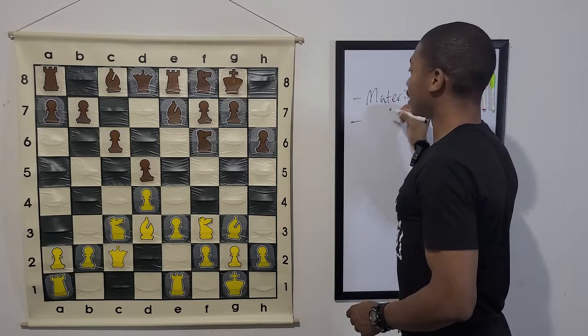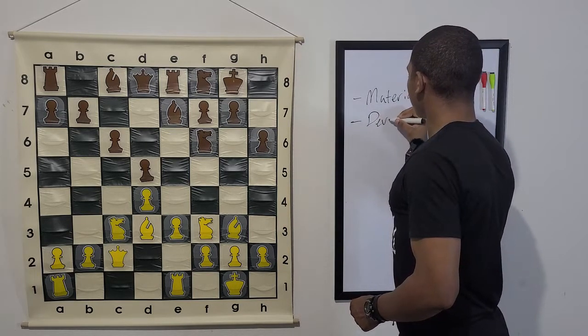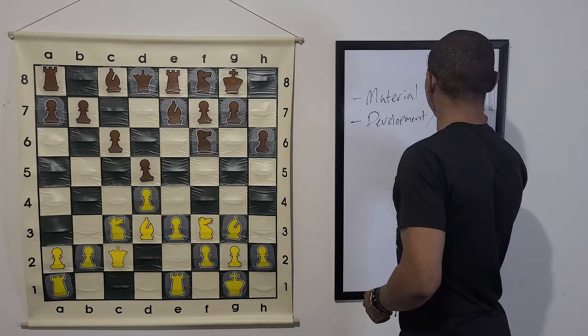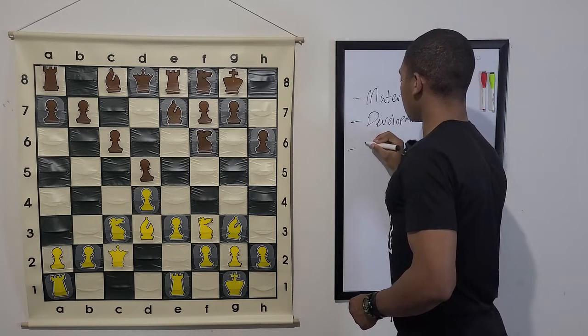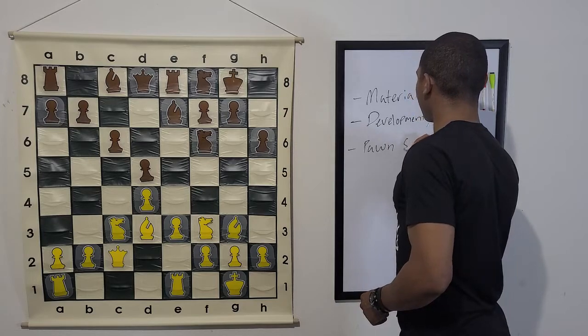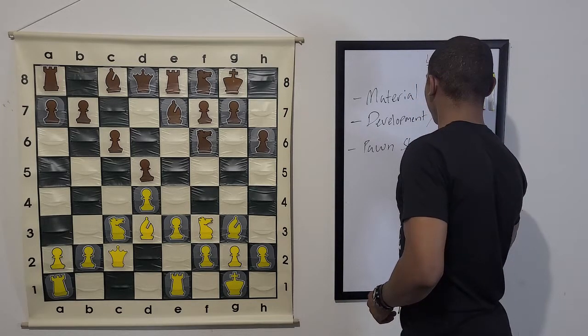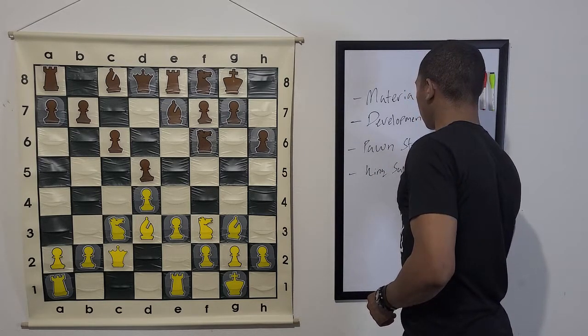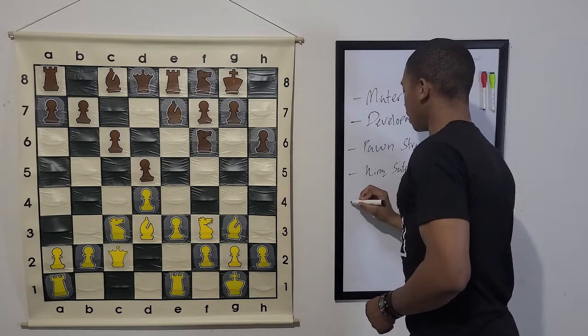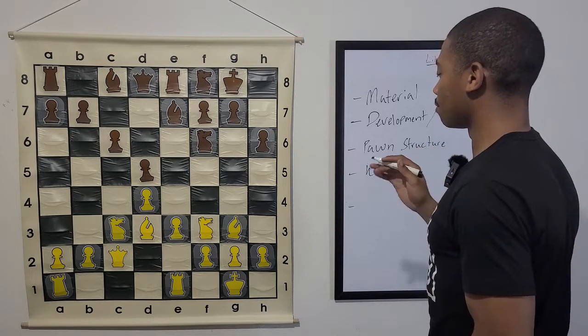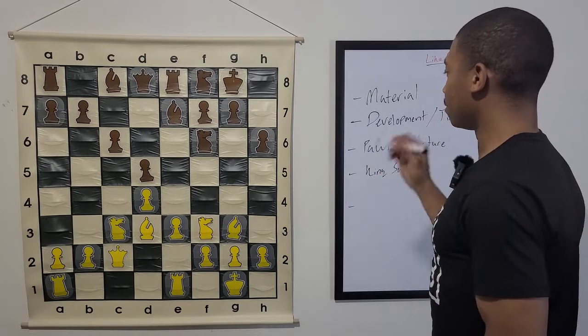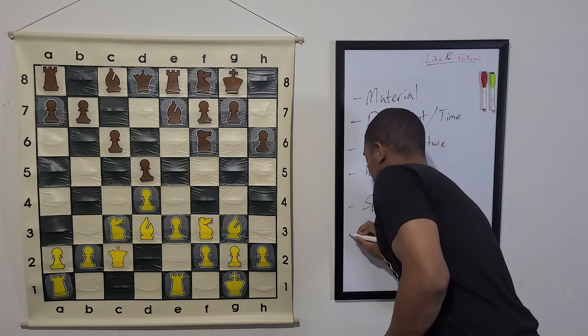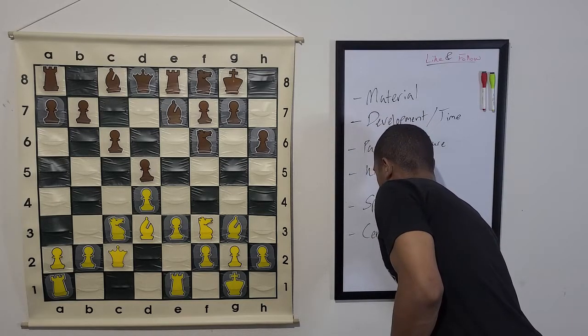So these are the six things that we're going to be looking at. First of all, material. So basically, who is up in material? Secondly, development or shorten it up, time. I'm going to explain all these afterwards. Third, pawn structure. And my handwriting is trash, so do not talk about it. Fourth, king safety. King safety is important. And then lastly, no, not lastly. I'm forgetting one. I know the next one is space. Oh, yeah. And then the sixth one, center control.